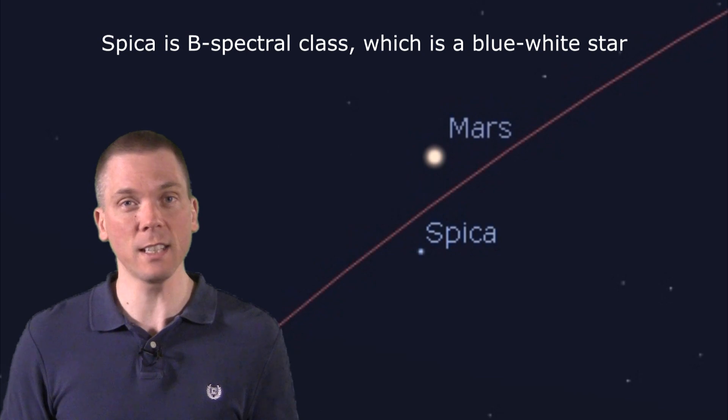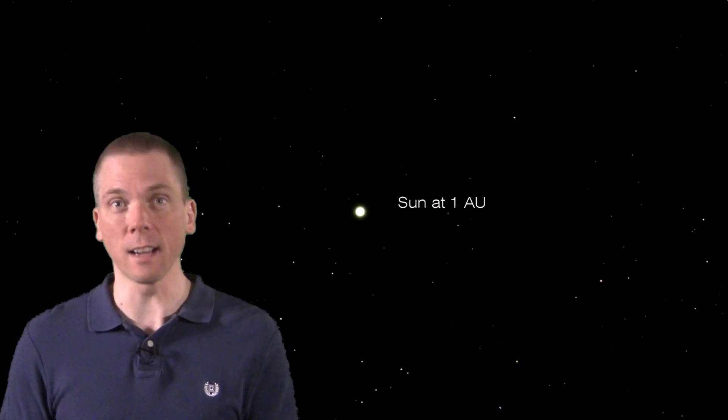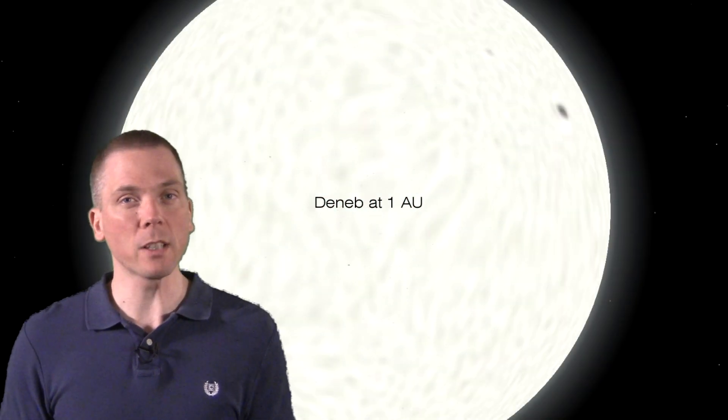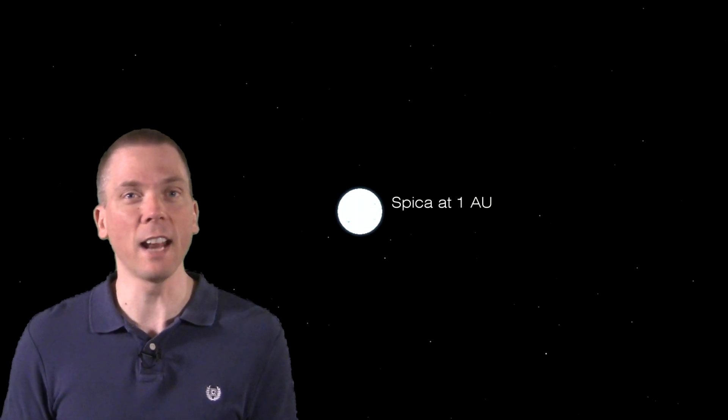At 250 light years distance and 1,900 times as bright as the Sun, it's unsurprisingly quite luminous, much like many other bright stars in our sky such as Rigel in Orion and Deneb in Cygnus. What is somewhat unique about Spica, though, is that for its brightness, it's not as large as one might expect.